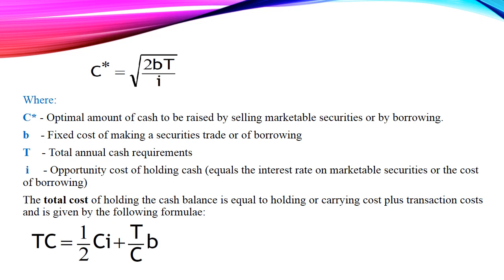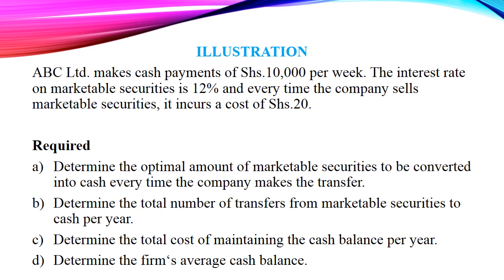The Baumol model is given by the formula: C equals the square root of 2BT over I, where C is the optimal amount of cash to be raised by selling marketable securities, B is the fixed cost of making a securities trade, T is the total annual cash requirements, and I is the opportunity cost of holding cash. The total cost is given as: TC = (1/2)CI + (T/C)B.